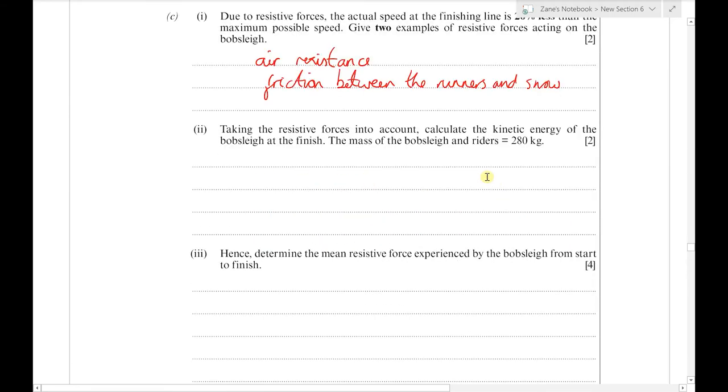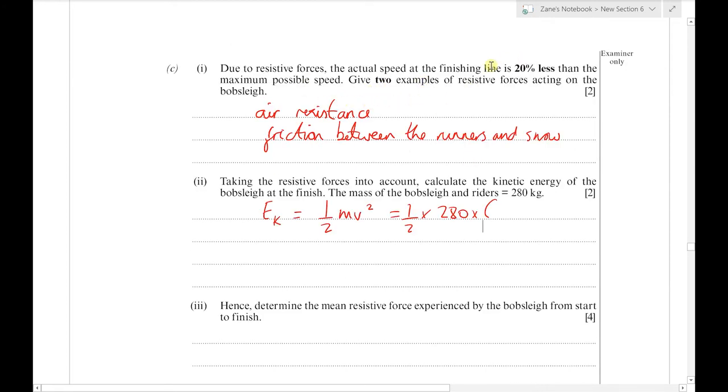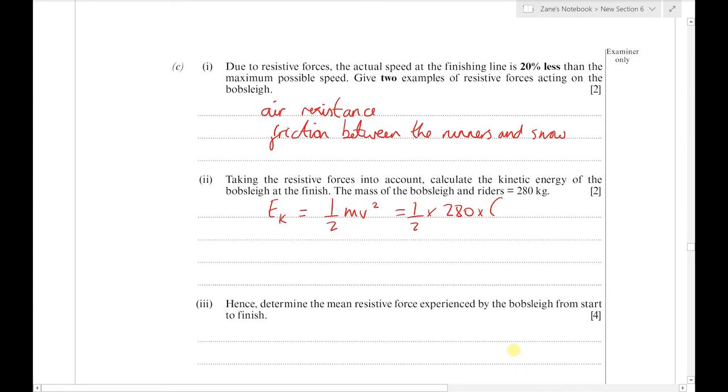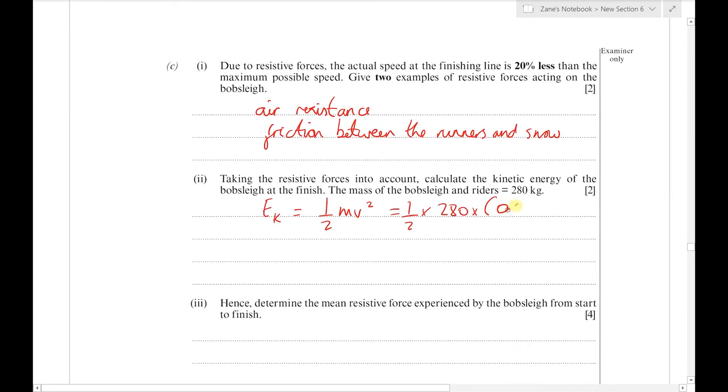Next, taking resistive forces into account, calculate the kinetic energy of the bobsleigh at the finish. The mass is 280 kg. Kinetic energy is half mv squared: half times 280 times 0.8 times that 48.5 squared, since we've lost 20% of velocity, leaving 80% of maximum speed.